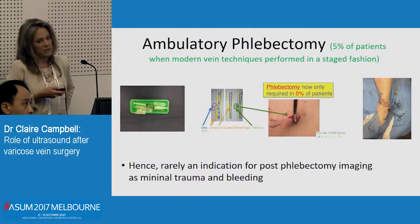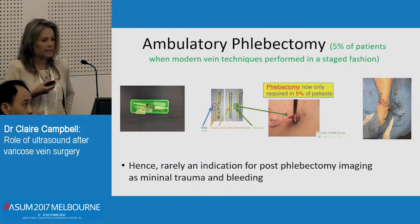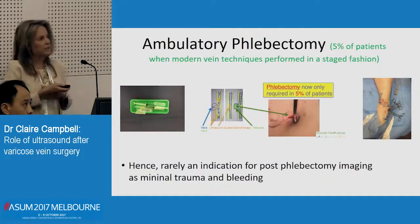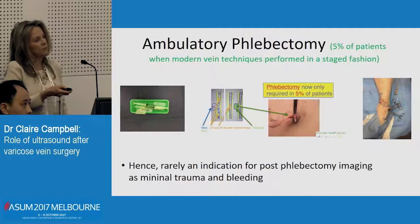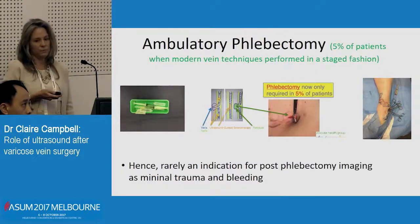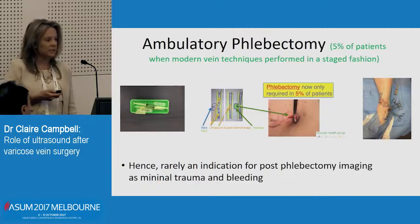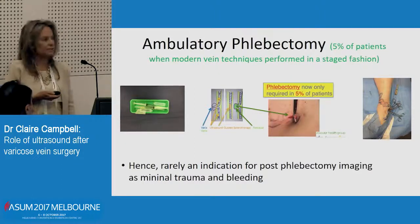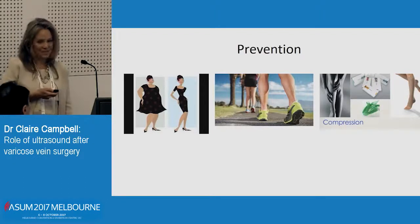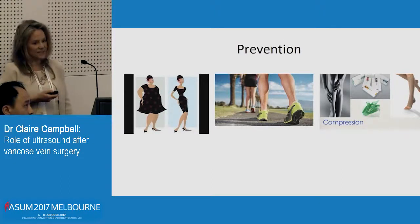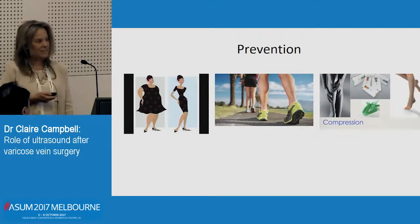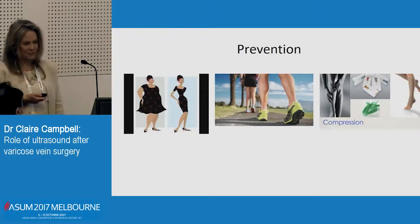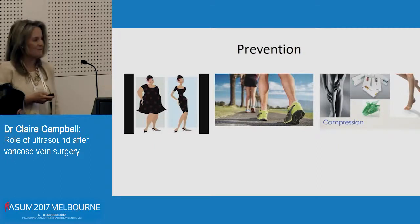Lastly, ambulatory phlebectomy — which I rarely perform now, because once you've done the laser and the thermal ablation, all of those bulging veins either reduce down so they're not visible and you can then inject, or often they become competent or have no flow. If it's still bulging, then we pull it out under local anaesthetic in the rooms — it's really a minor procedure by then and you'd rarely have any indication to do any ultrasound after that. Don't forget to talk to your patients about prevention: maintaining a normal weight, not spending long periods standing or sitting, and wearing compression.